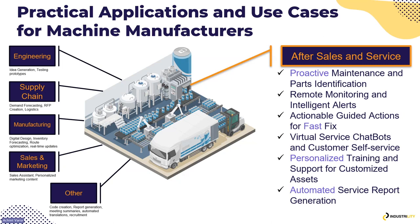Let's bring this to practical applications that really apply to machine manufacturers like yours. We've got engineering companies taking idea generation and testing prototypes. We've got supply chain companies where RFPs are being created automatically with Gen AI generating the RFPs. We've got manufacturing companies using machine learning and vision technologies to design and improve their manufacturing processes. Sales teams are creating personalized marketing content. We've got developers who are creating code at scale. However, Industrility is very much focused on after-sales and service improvement. The demos we will look at will be very focused on after-sales and service.